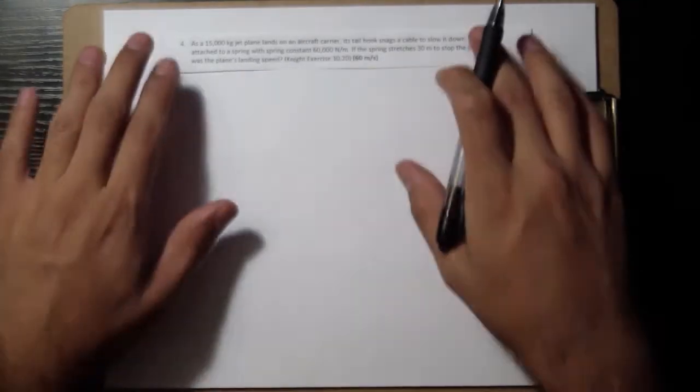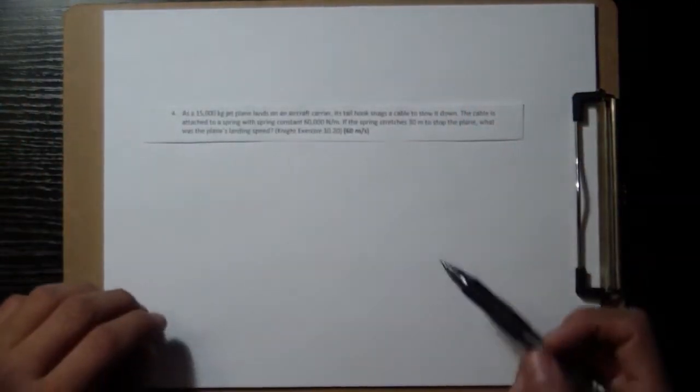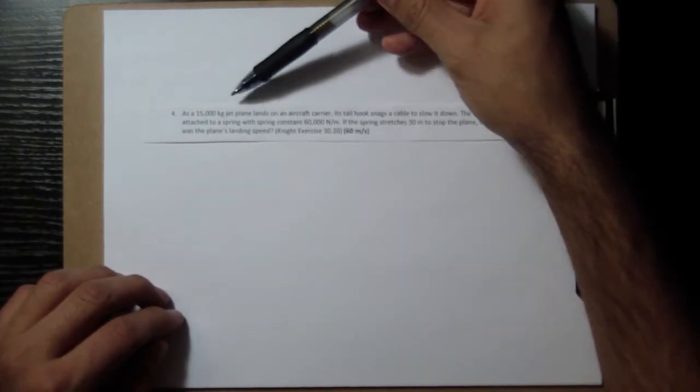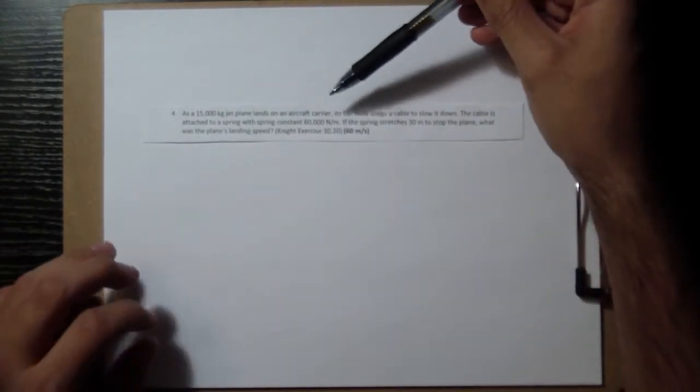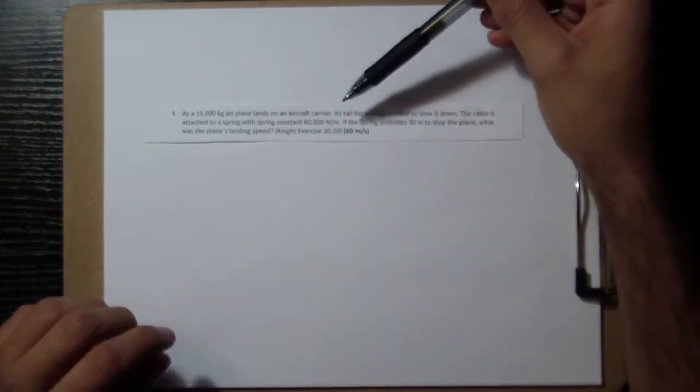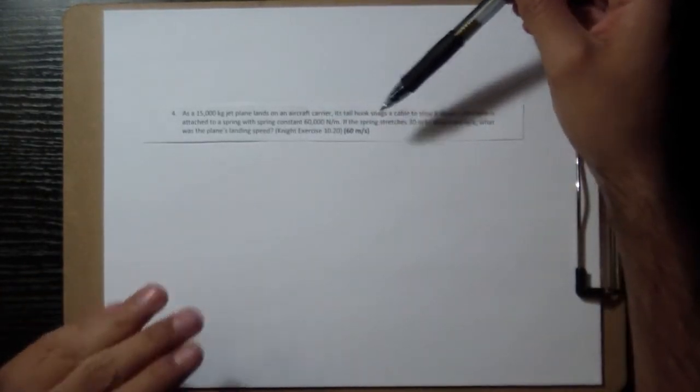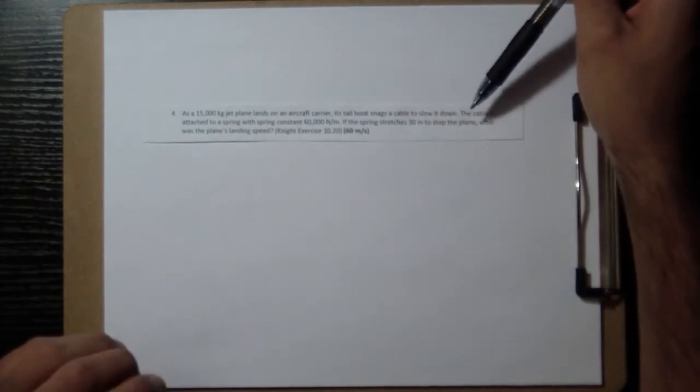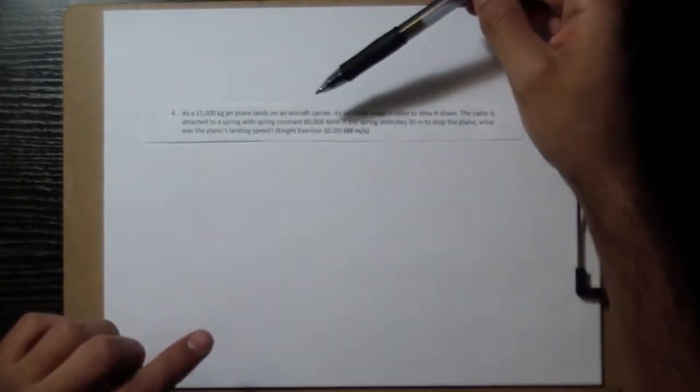All right, let's look at problem number four. As a 15,000 kilogram jet plane lands on an aircraft carrier, its tail hook snags the cable to slow it down. The cable is attached to a spring with a spring constant of 60,000 newtons per meter. If the spring stretches 30 meters to stop the plane, what was the plane's landing speed?